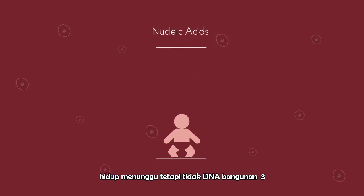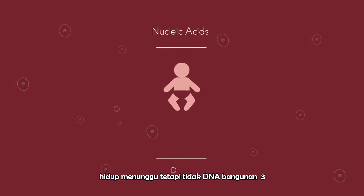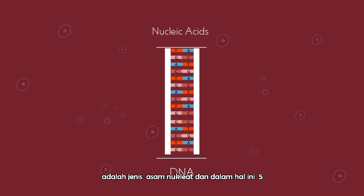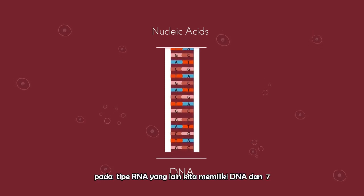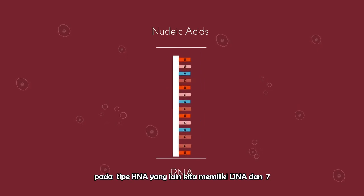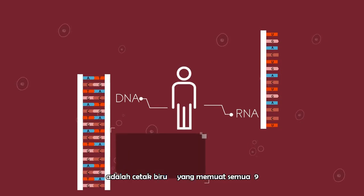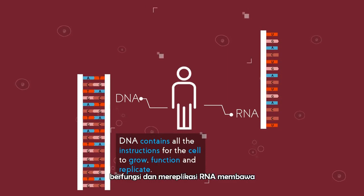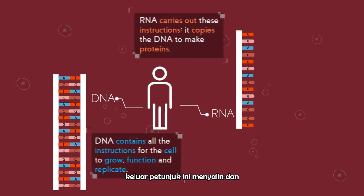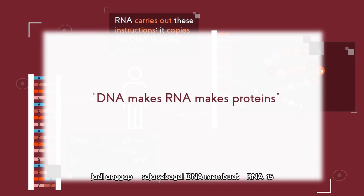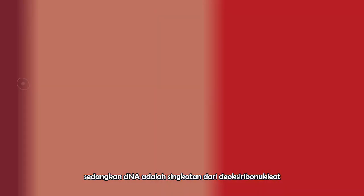Nucleic acids are the building blocks of life. DNA is a type of nucleic acid, and in this video we are going to have a quick look at another type: RNA. We have both DNA and RNA in our bodies and we need them both. DNA is the blueprint — it contains all of the instructions for the cell to grow, function, and replicate. RNA carries out these instructions, copying and transferring the genetic code from the DNA to ensure the relevant proteins are made. Think of it as: DNA makes RNA makes proteins.